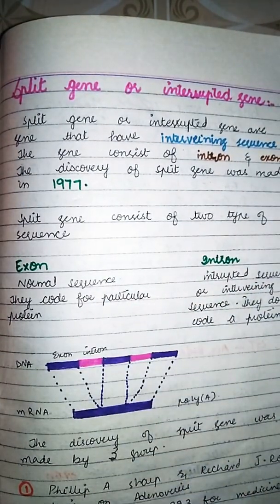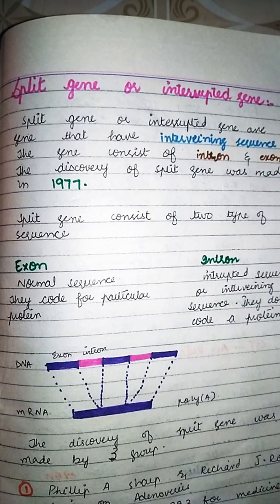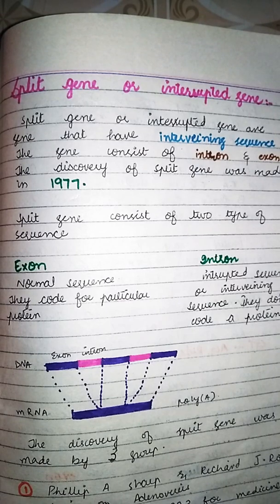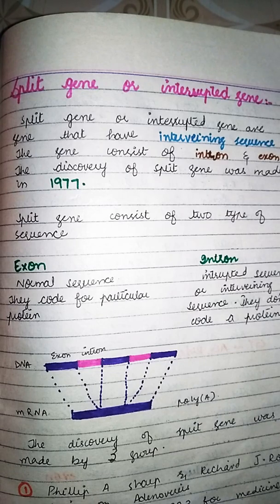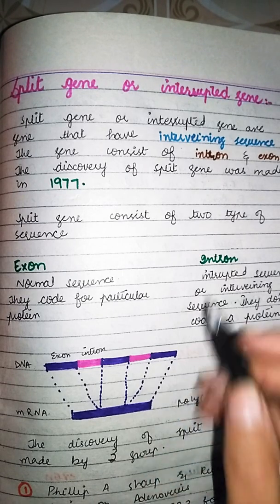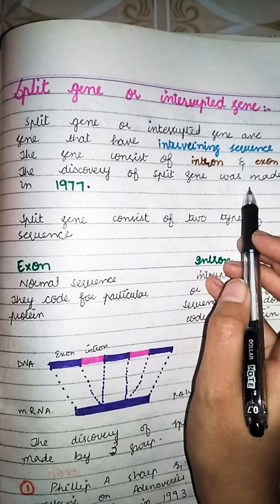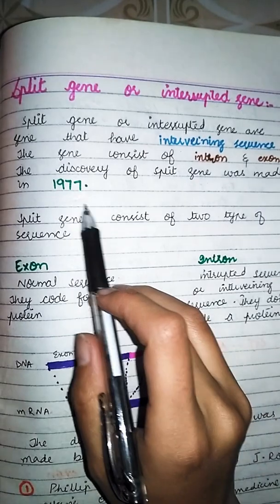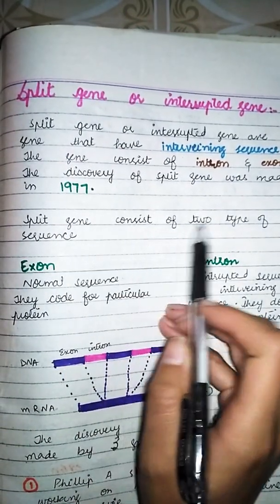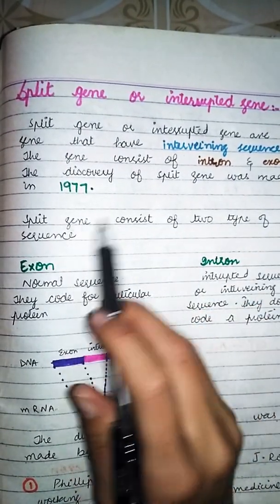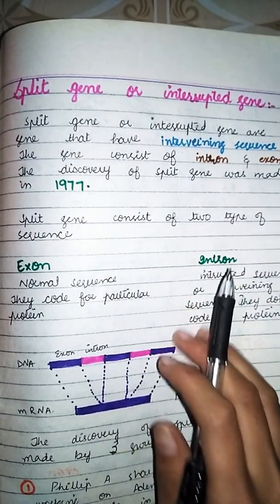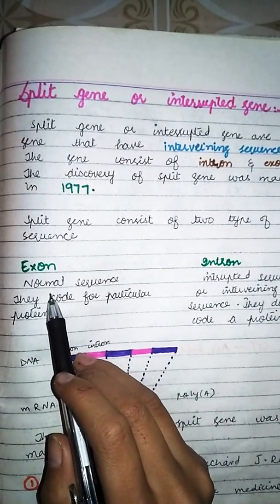Split gene کو ہم interrupted gene بھی کہتے ہیں۔ یہ basically ایک gene ہوتی ہے جس میں intervening sequence ہوتا ہے۔ Split gene consist کرتی ہے intron اور exon پر، اور اس کی discovery 1977 میں ہوئی ہے۔ Split gene میں two types کے sequences ہوتے ہیں: first is exon and intron.